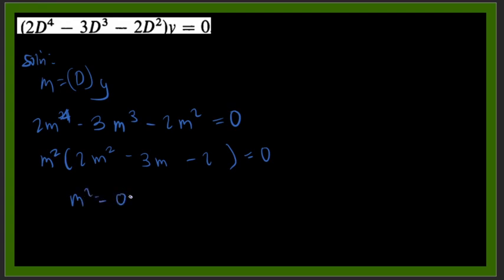Times 2m squared minus 3m minus 2. So we could say that one of our roots, we have two roots which is m squared equals zero. So we could have m1 and m2. Okay, so they are equal to zero. So we have a repeated root which is equal to zero.